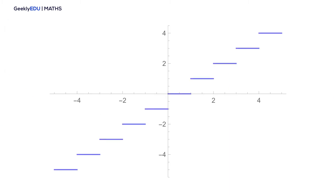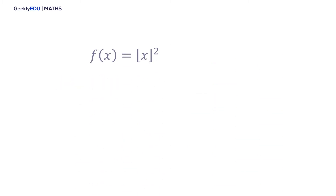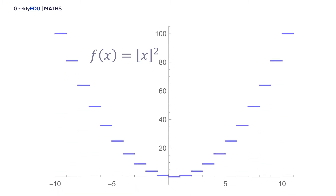When we graph this greatest integer function, we obtain a graph that looks like a staircase, so it can also be called the step function. But as with any other function, we can manipulate it. If we change the function from f(x) equal to the greatest integer of x to f(x) equal to the greatest integer of x squared, we get a new step function graph but now with the form of a parabola.